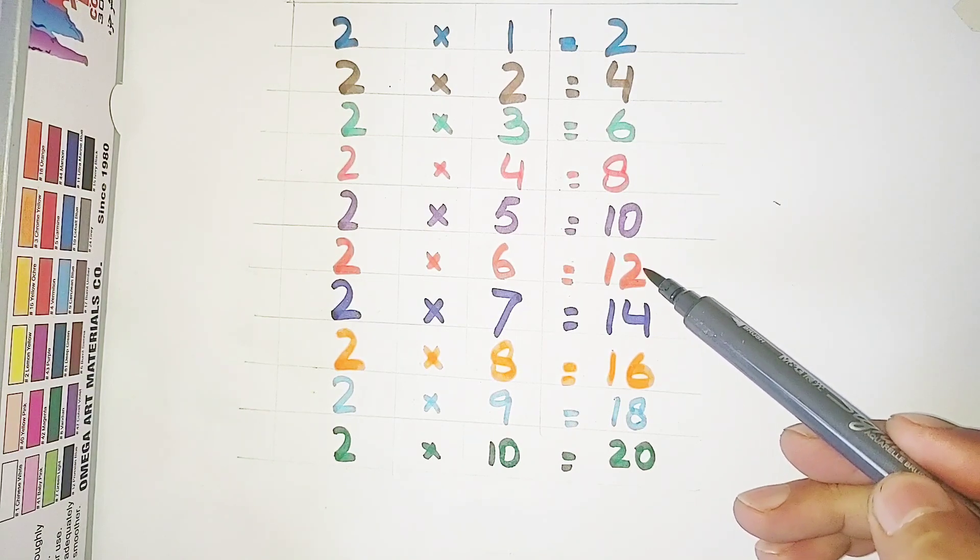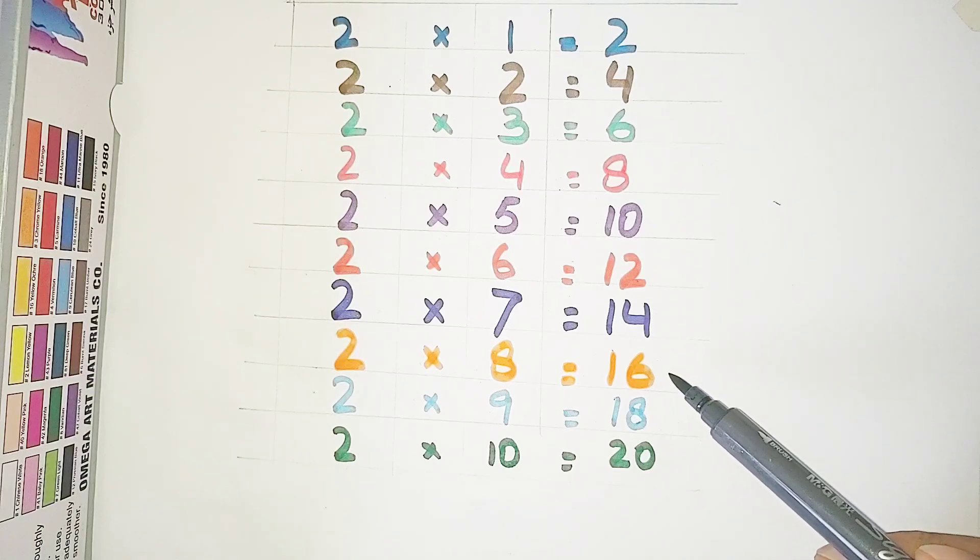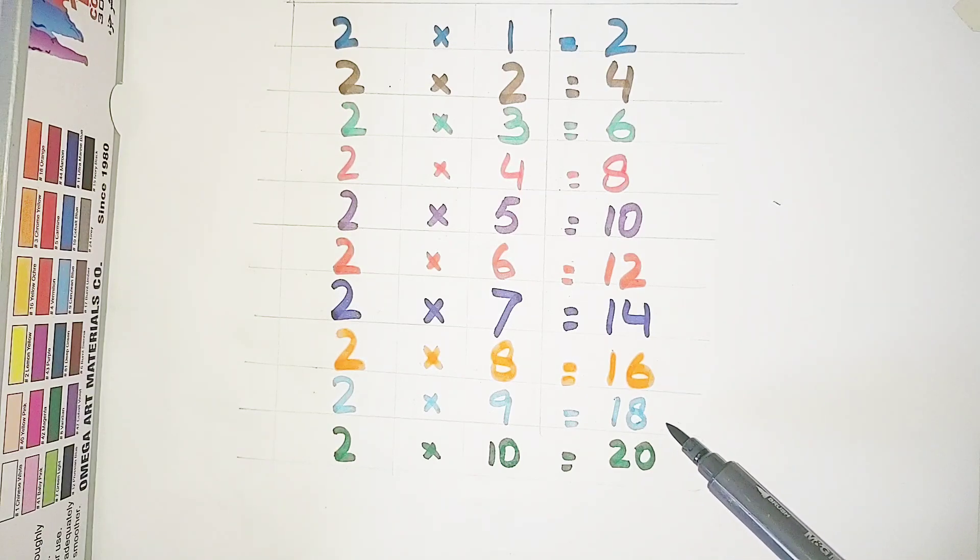2 sixes are 12, 2 sevens are 14, 2 eights are 16, 2 nines are 18, 2 tens are 20.